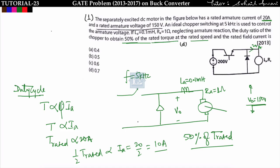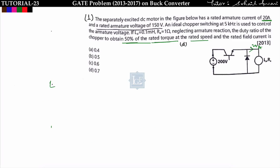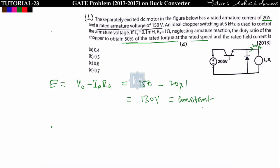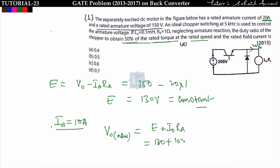We have to find the duty cycle for which armature current is 10 ampere. First, find the back EMF: E = V0 - Ia × Ra = 150 - 20 × 1 = 130 volt, which is constant. For 50% rated torque with the new armature current of 10 ampere, the new V0 = E + Ia_new × Ra = 130 + 10 × 1 = 140 volt. Therefore, duty cycle = V0_new / Vs = 140 / 200 = 0.7.